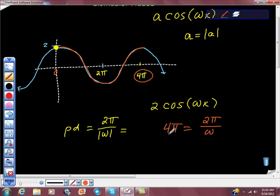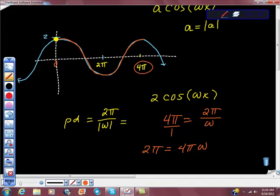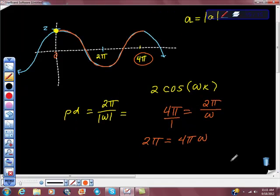From here, all I'm going to do is just a little bit of cross multiplication. So I'm going to multiply this way and that, and we're going to get 2π equals 4π omega. Omega looks a little bit like a W, right? I'm going to divide both sides by 4π.